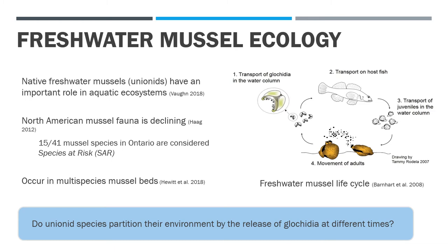Unionids have an important role in aquatic ecosystems, where they help to improve water quality through suspension feeding. However, there is an increasing conservation concern for unionids as mussel fauna is declining, and part of this may be due to their complex reproductive cycle, which involves a parasitic larval stage on a vertebrate host.